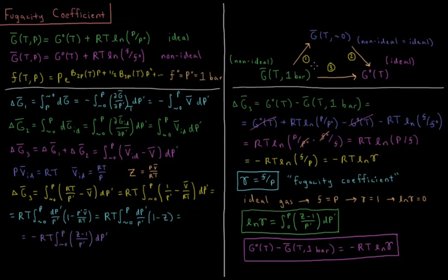We're going to do a similar type of thing: expand the gas from one bar down to a very low pressure where it behaves ideally — not zero, but close enough to zero that all gases are ideal — and then compress it back up to one bar as an ideal gas and see what relations we can derive from this.